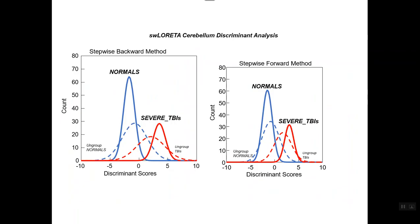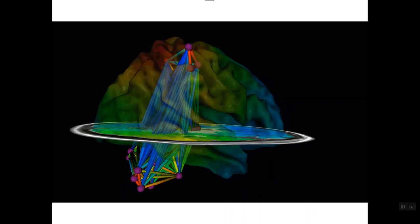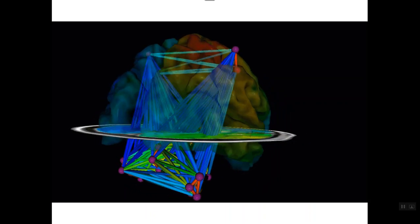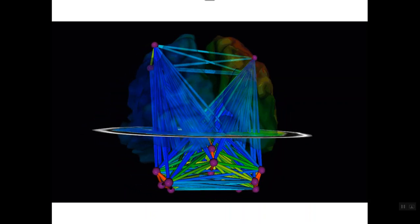We also looked at discriminant analyses of mild traumatic brain injury, as well as severe traumatic brain injury. The normals are solid blue. The mild are dashed blue. The moderate injury are the dashed red, and the solid red are severe TBI. But we could discriminate them with high accuracy. And again, it's the cerebellar aspects of it.